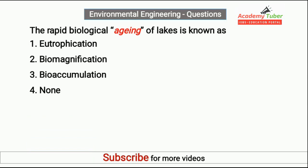The rapid biological aging of lakes is known as? Answer is Eutrophication.